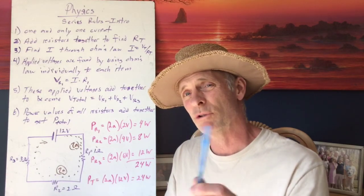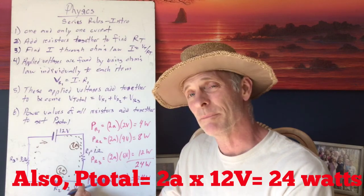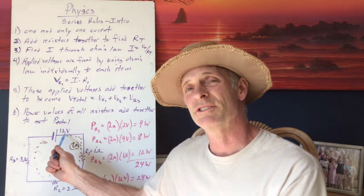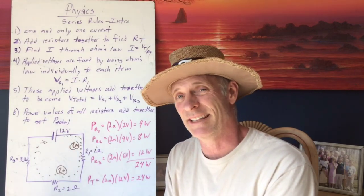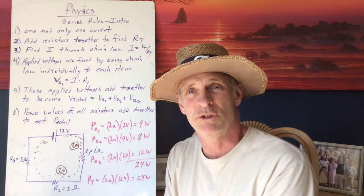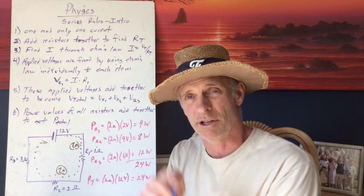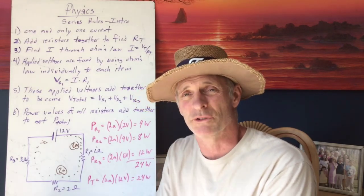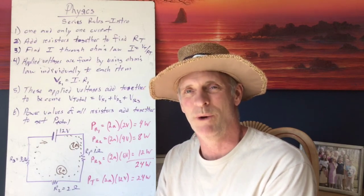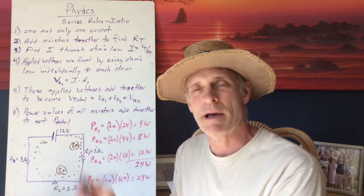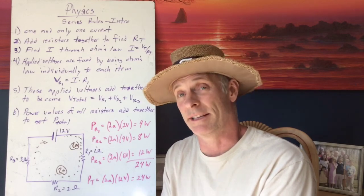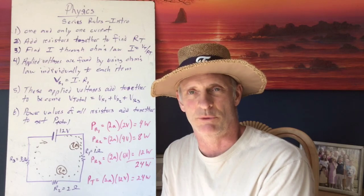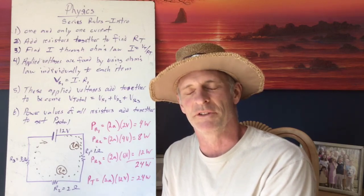Here's how you know you did it right: take the total power for the entire circuit — 2 amps times the total voltage of 12 volts from the battery supply. That gives 24 watts. When you add individual powers together you get 24 watts, and when you multiply current by total voltage you also get 24 watts. We know we've done this right.